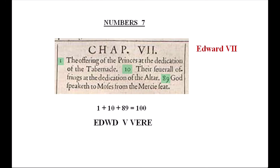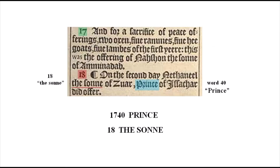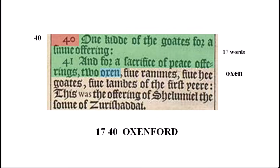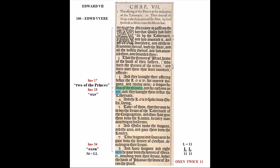If de Vere thought of himself as Edward VII, I find it interesting that I found so many codes in Numbers 7. Looking at verse 17, start counting and the fortieth word is 'Prince.' And under 18 is 'the Son,' meaning his son Henry: 17, 40, Prince; 18, the Son. And in verse 40, there are 17 words followed by 'Oxen' — code for 17, 40, Oxenford. Also, from the beginning of the chapter, lines 17 and 18 read 'Two of the Princes and Ox.' Line 34 begins with 'Ox.' 34 is LL with a repeated count. With gematria, L is the eleventh letter, so two L's can be read as 11-11, or twice 11.